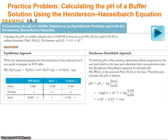So let's do another example — calculate the pH of a buffer solution that is 0.05 molar benzoic acid and 0.15 molar sodium benzoate. For benzoic acid, the Ka is 6.5 times 10 to the minus 5. Just looking at it, we know we're going to get a pH somewhere around 4 to 5 because of the pKa.